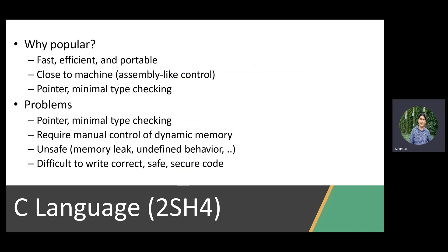We also mentioned some problems related to security, including pointers, minimal type checking, and being a less strict language. You require manual control of dynamic memory, which can increase human error and security problems. C is more towards the machine side than the human side on the programming language spectrum — it's not very intuitive, very convoluted compared to Python, MATLAB, which are more human-readable. But this was intended because it's a trade-off: if you want hardware control, you want it closer to the machine.